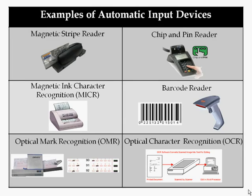A magnetic stripe reader, shown at the top left, is used hardly ever now but used to be used in shops to automatically get people's credit card details and number from a credit card into a computer. Now we tend to use chip and pin readers for these. A magnetic ink character recognition (MICR) system would read magnetic ink on cheques, and these were used in banks a few years ago, but we hardly ever use cheques now.